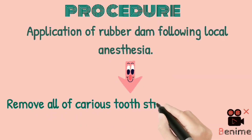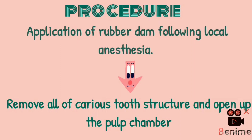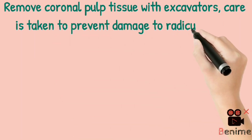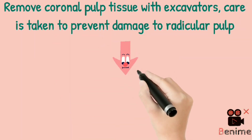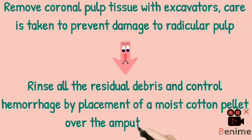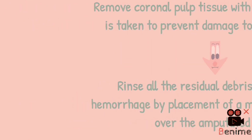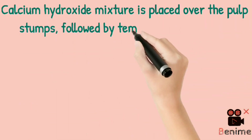Let's begin with the procedure. First, give local anesthesia to the patient, then apply rubber dam. After that, remove all carious tooth structure and de-roof the pulp chamber. Now, using a spoon excavator, remove the coronal part of the pulp tissue without damaging the radicular pulp. After that, remove all residual debris with saline and control hemorrhage by placing a moist cotton pellet over the amputated pulp.